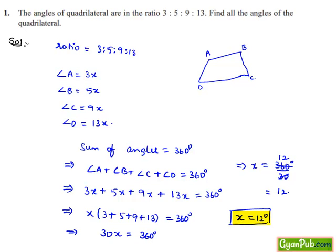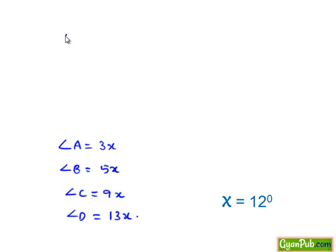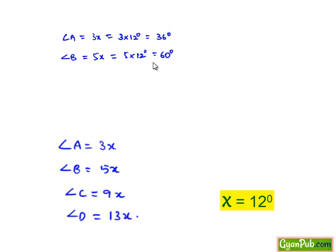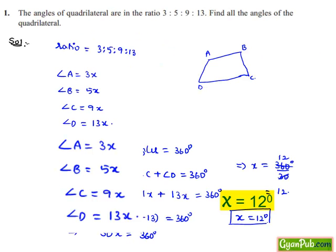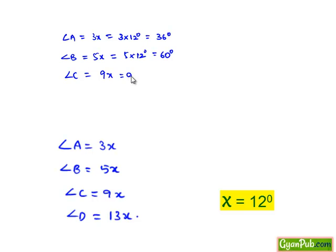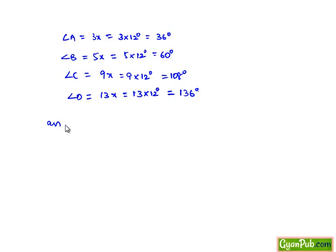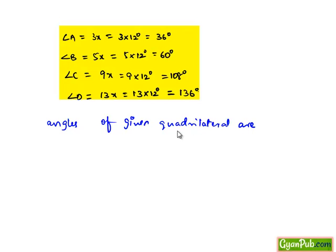Now as we got x is equal to 12 degrees, let us substitute in angles A, B, C, and D. Then we get angle A is equal to 3x, which is 3 times 12 degrees, nothing but 36 degrees. Angle B is 5x, which is 5 times 12 degrees, that is 60 degrees. Angle C is 9x, which is 9 times 12 degrees, that is 108 degrees. And angle D is equal to 13x, which is 13 times 12 degrees, that is 156 degrees. So finally, the angles of the given quadrilateral are 36 degrees, 60 degrees, 108 degrees, and 156 degrees.